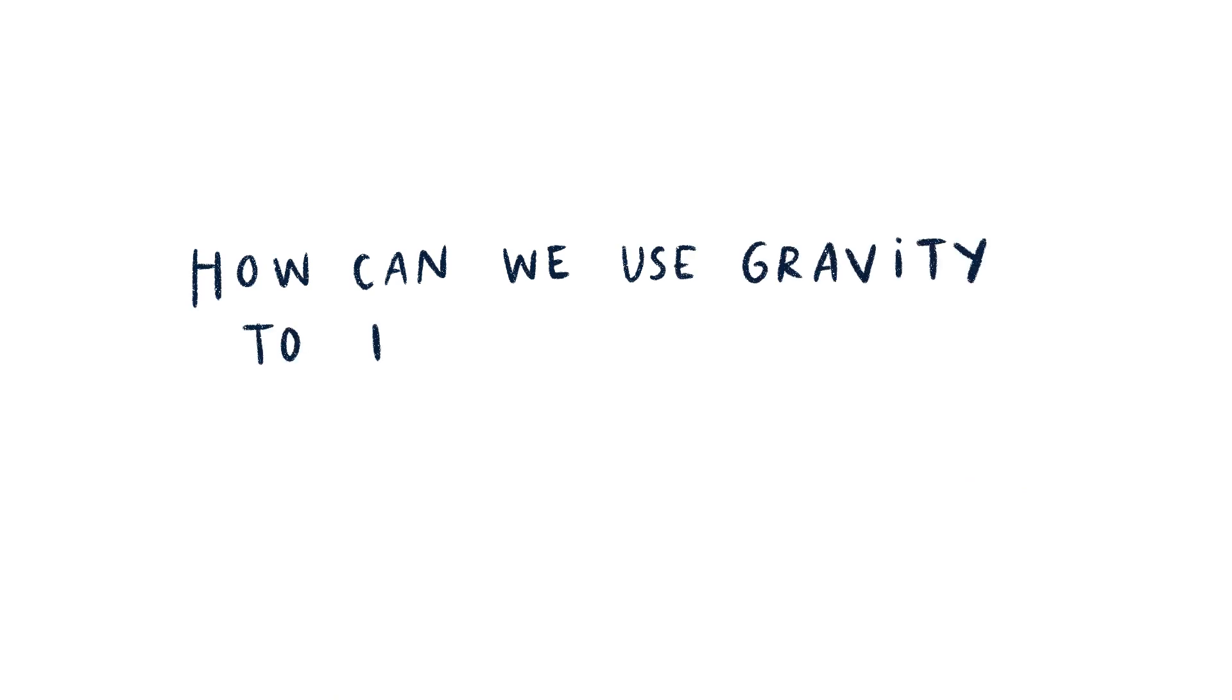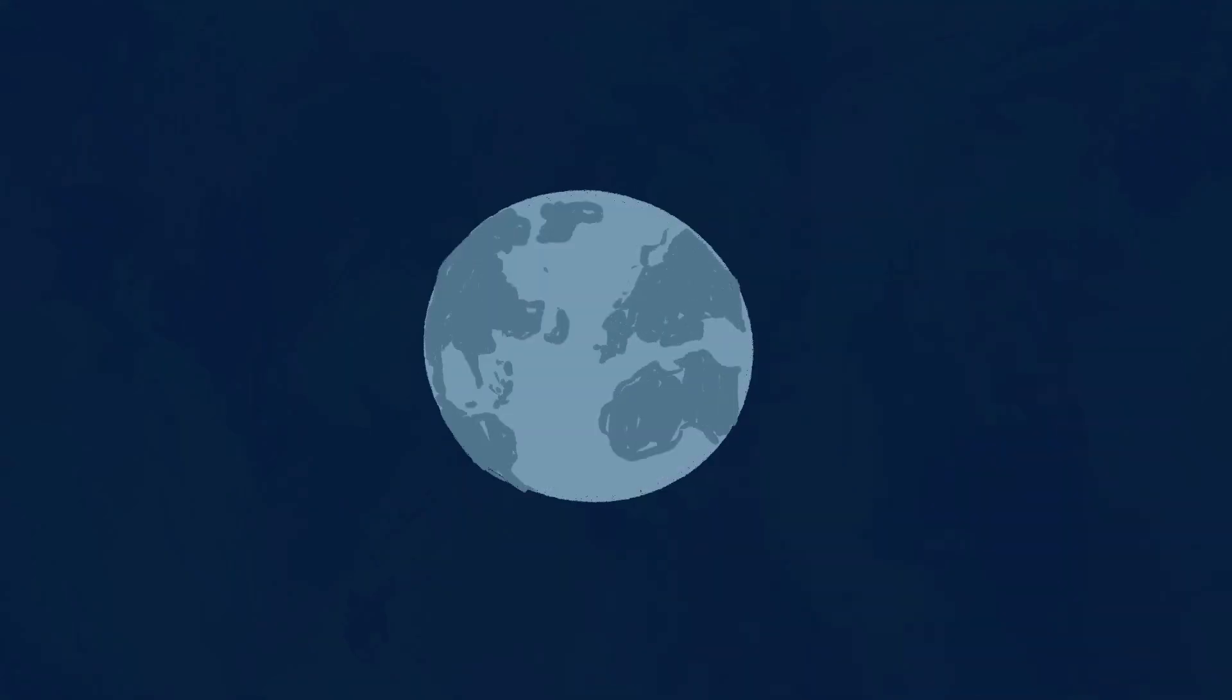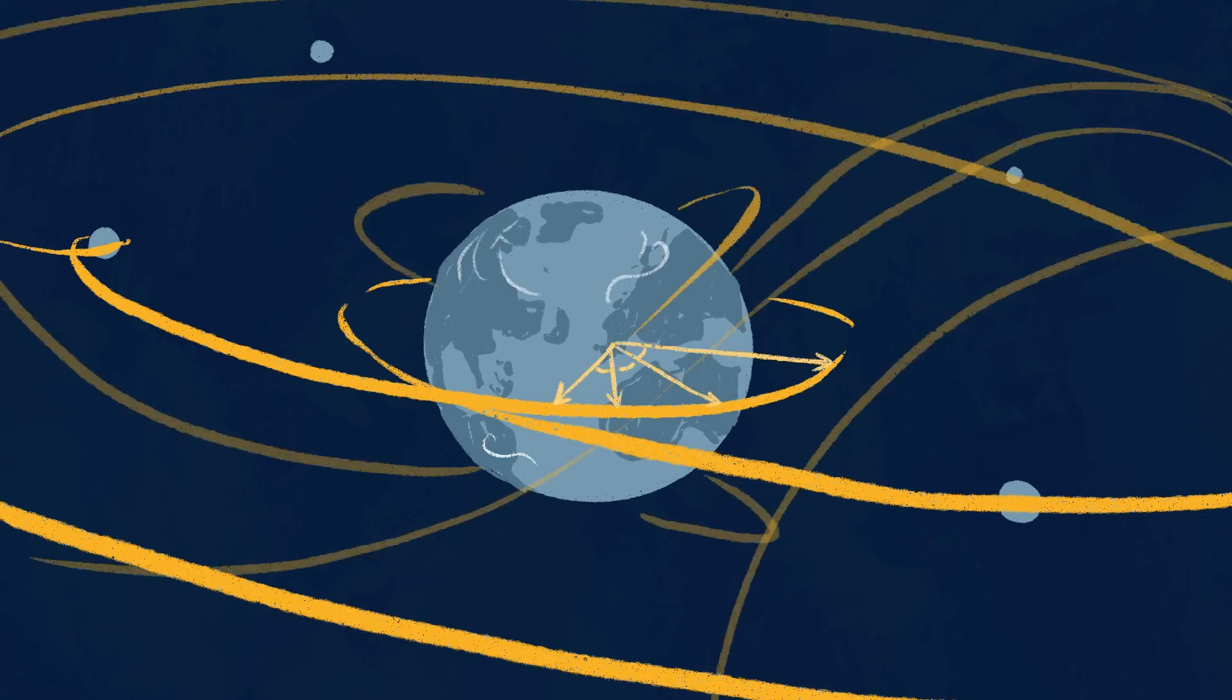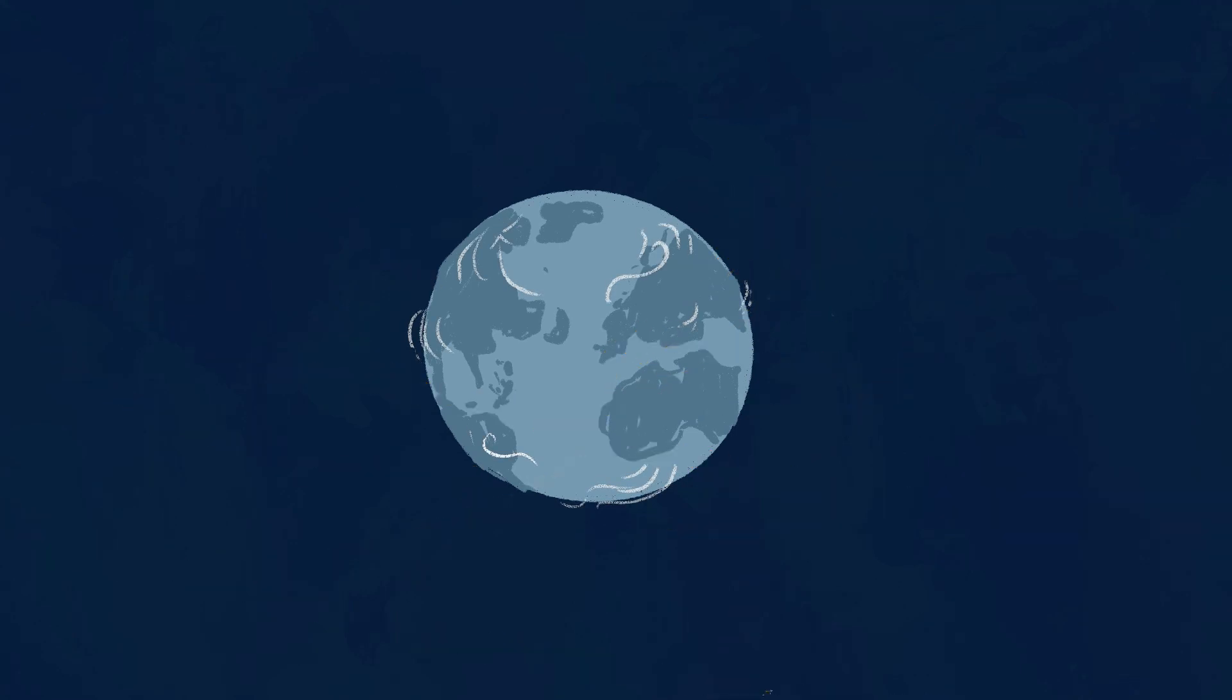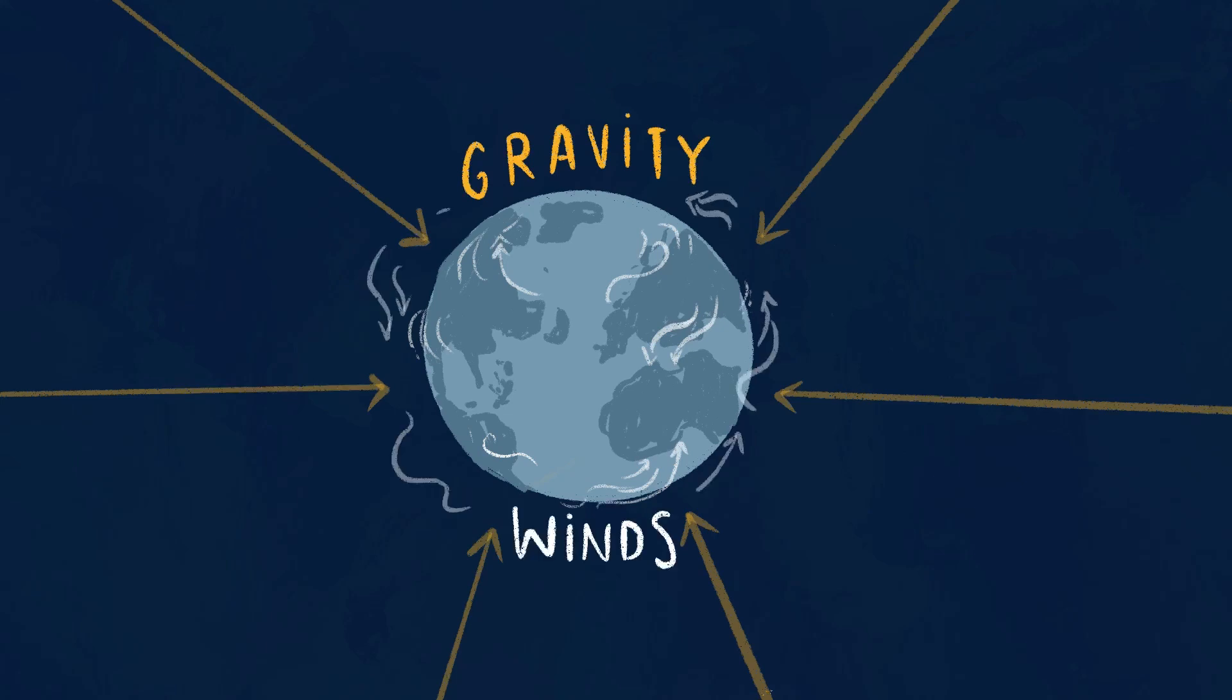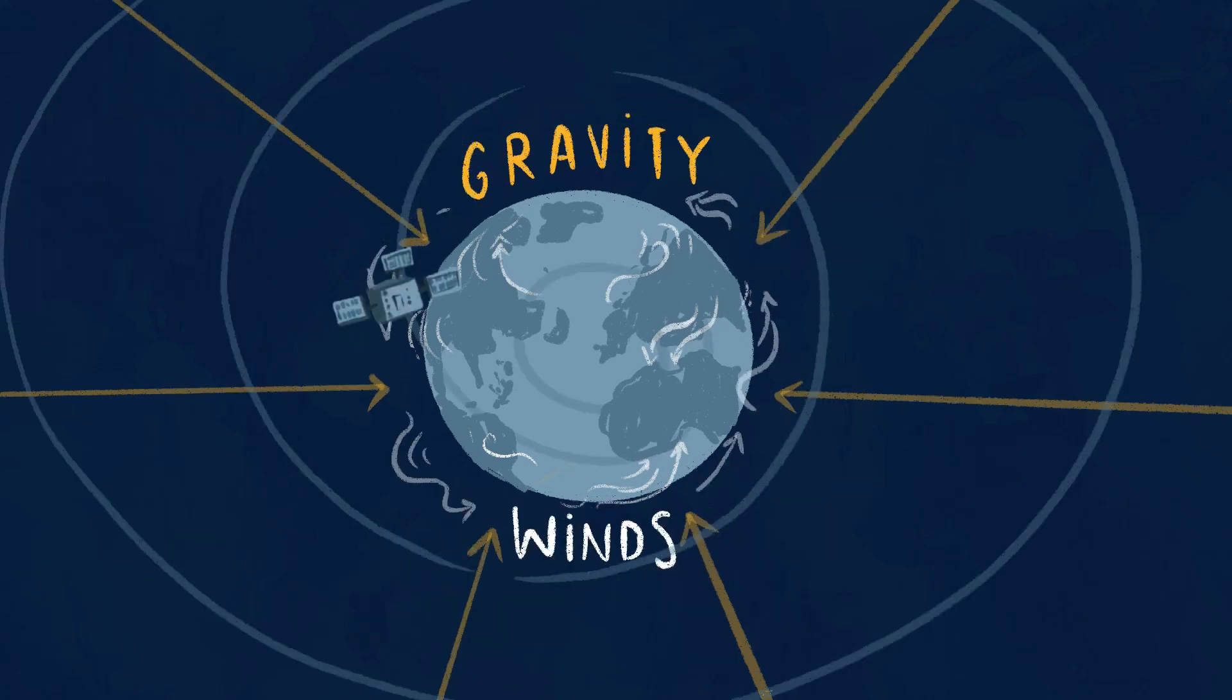How can we use gravity to travel in space? Aerospace engineers who specialize in orbital mechanics use physics to chart spaceflights. Based on Earth's gravity and rotation, and even local winds, they can break a spacecraft out of orbit and guide it safely back home. But timing is everything.